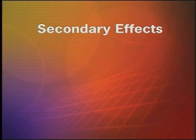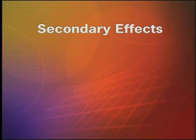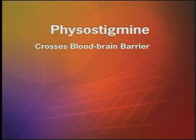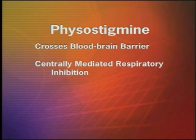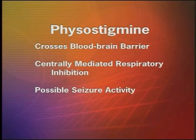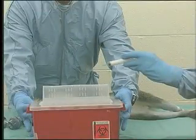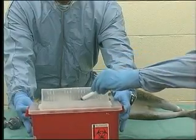Secondary effects are seen at the autonomic ganglia, at the neuromuscular junctions, or the nicotinic sites, and they include skeletal muscle fasciculations and paralysis. Physostigmine crosses the blood-brain barrier and causes a centrally mediated respiratory inhibition and possible seizure activity. Please remember never to recap needles and dispose of them immediately into the sharps container provided.